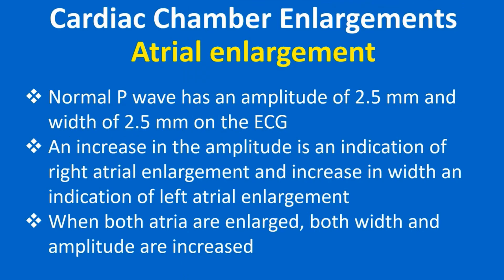Normal P wave has an amplitude of 2.5 mm and a width of 2.5 mm on the ECG. An increase in the amplitude is an indication of right atrial enlargement, and an increase in width is an indication of left atrial enlargement. When both atria are enlarged, both width and amplitude are increased.